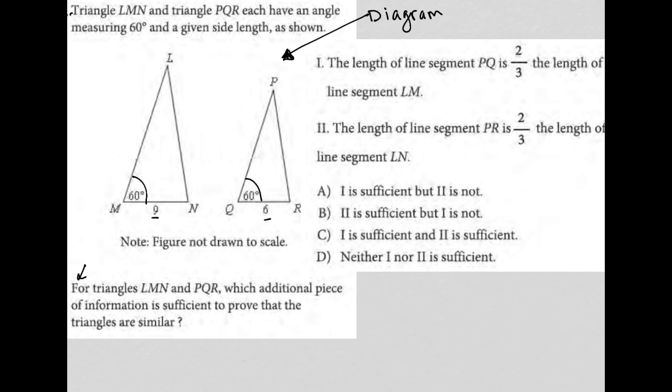It goes on to say for triangles LMN and PQR, which additional piece of information is sufficient to prove that the triangles are similar? So I'm looking at this word prove. I'm seeing these triangles. I'm thinking about proofs from geometry, which I have never met someone who loved that. So I'm thinking, how do you prove that two triangles are similar?